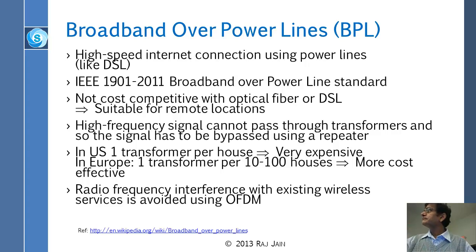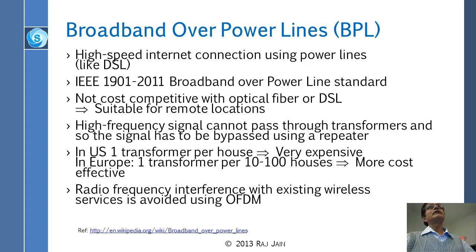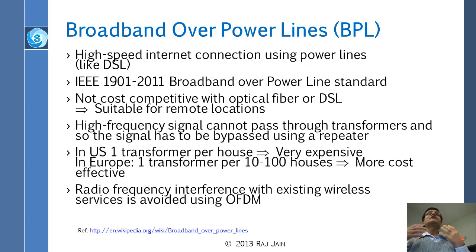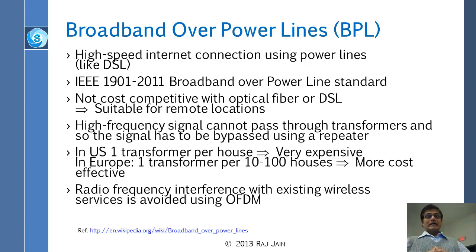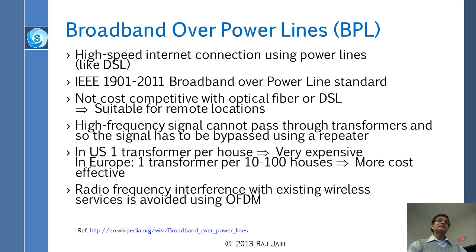There is an IEEE 1901 standard that covers this, among other things. The normal electrical signal is 50 Hz in Europe and 60 Hz in the United States, but anything above that frequency can be used for internet or data communication. It turns out that BPL did not succeed in the United States, though it may have been more successful in Europe.